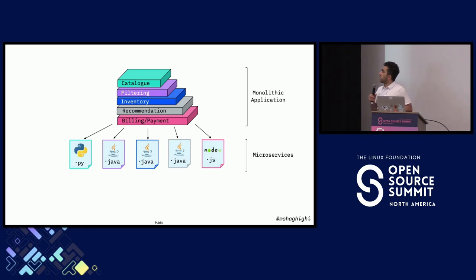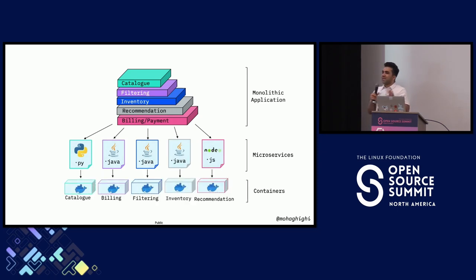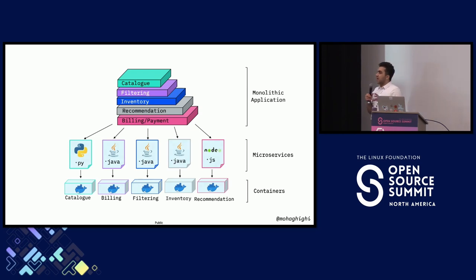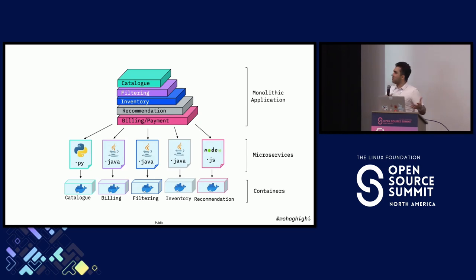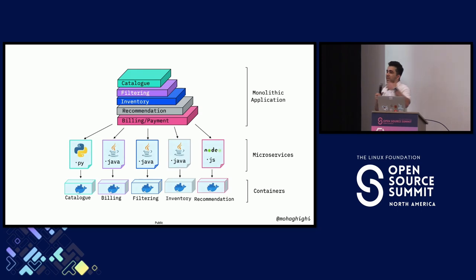We've broken down our monolithic applications into microservices. Now we're going to containerize each one of those microservices with their dependencies and libraries. This way, you can easily run any one of these containers on any cloud, on any environment — giving you multi-cloud or hybrid cloud capability. Some financial services applications end up with more than 250 microservices, and I'm talking about medium-sized applications.